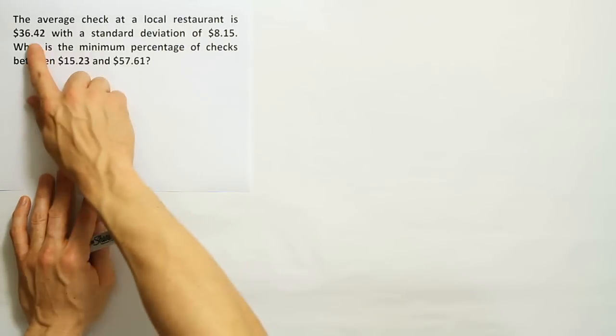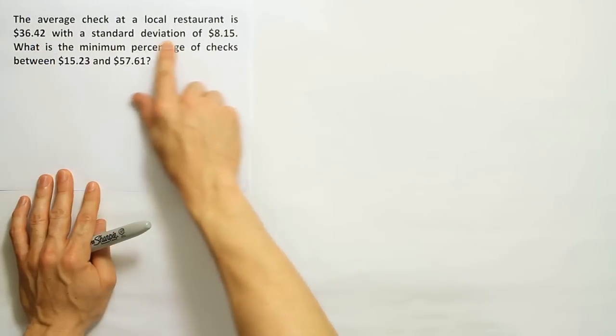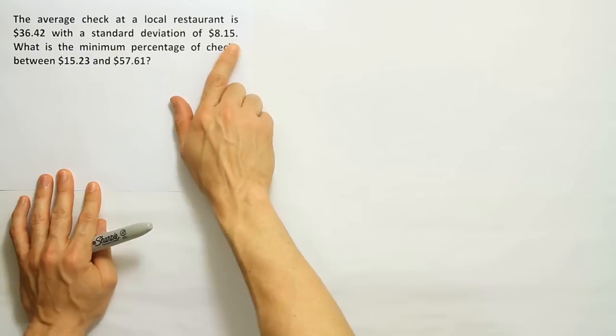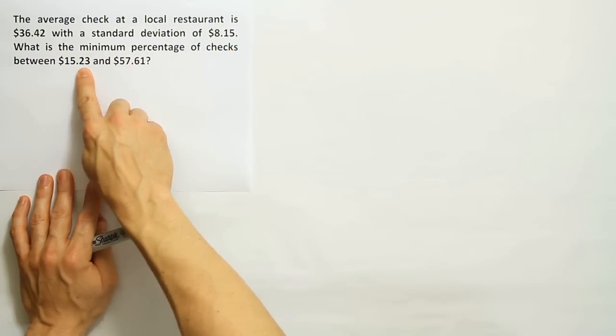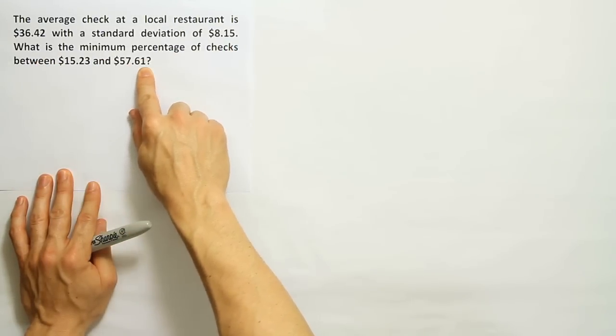The average check at a local restaurant is $36.42 with a standard deviation of $8.15. What's the minimum percentage of checks between $15.23 and $57.61?